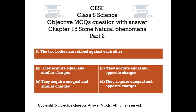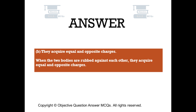Question number 5: When two bodies are rubbed against each other. Option A: They acquire equal and similar charges. Option B: They acquire equal and opposite charges. Option C: They acquire unequal and similar charges. Option D: They acquire unequal and opposite charges. The right answer is Option B — they acquire equal and opposite charges. When two bodies are rubbed against each other, they acquire equal and opposite charges.